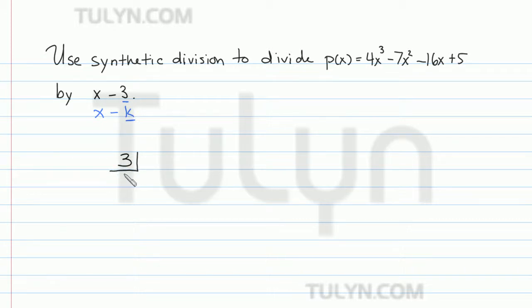We want to write the coefficients of p(x) detached from their variables. So right next to the 3, we want to write 4, negative 7, negative 16, and then positive 5. And then we want to draw a line under the coefficients, leaving enough room to write stuff underneath.